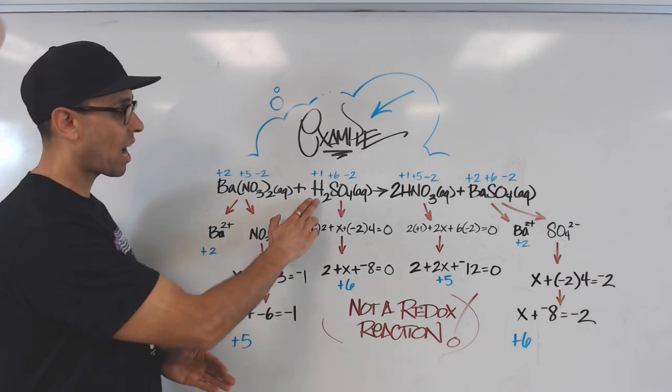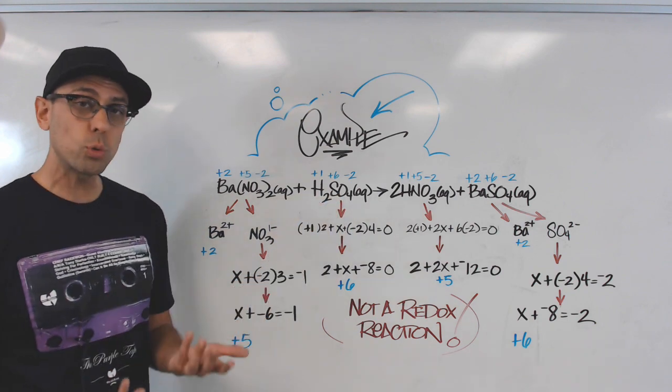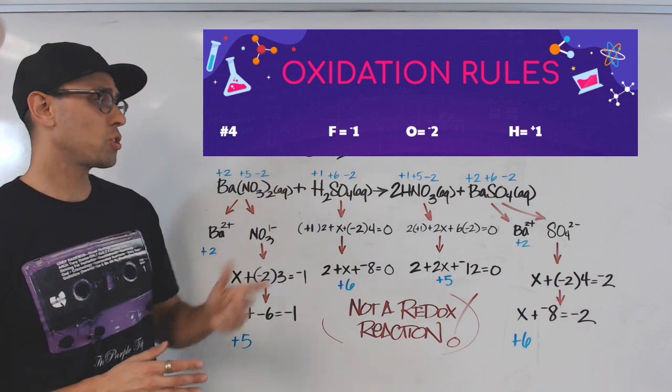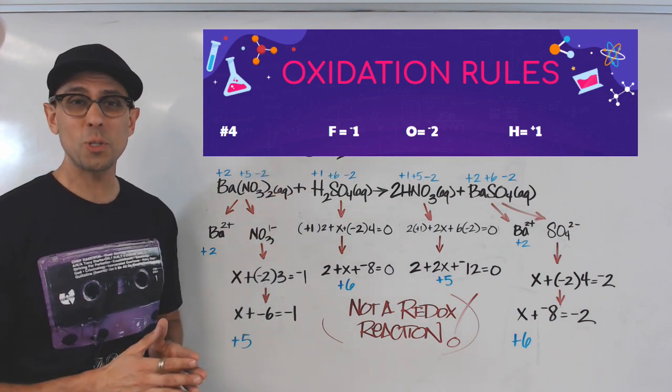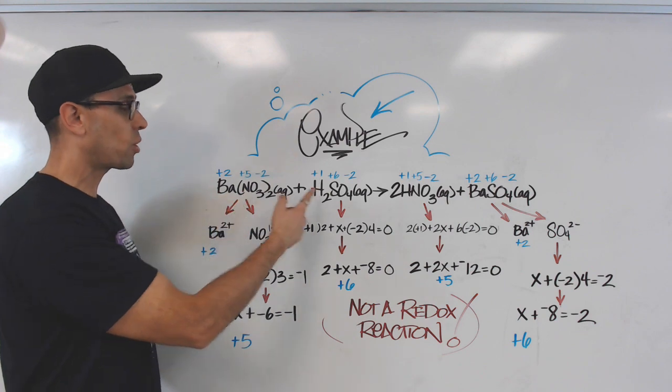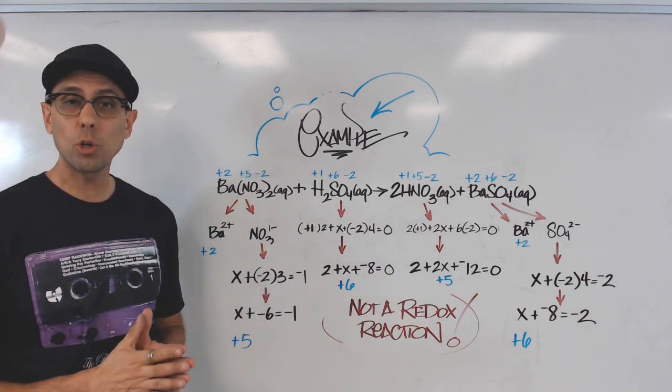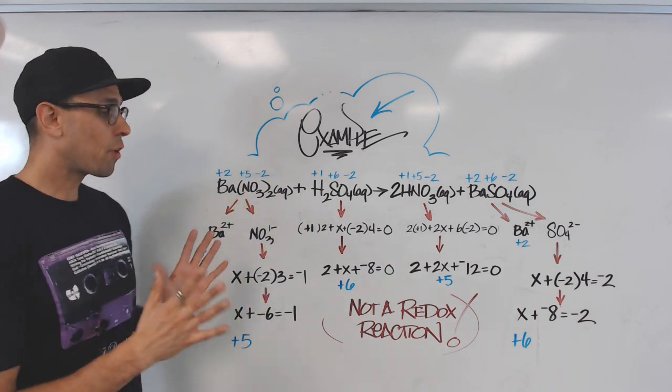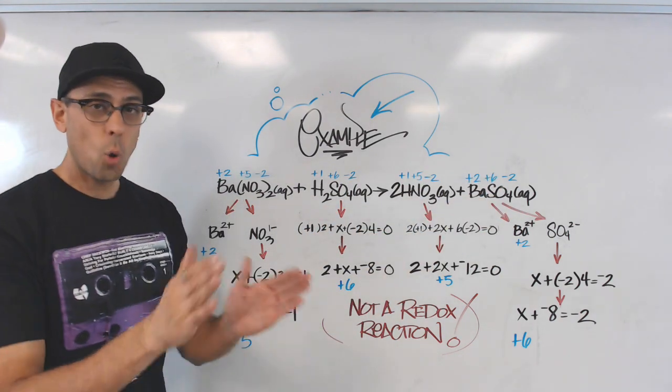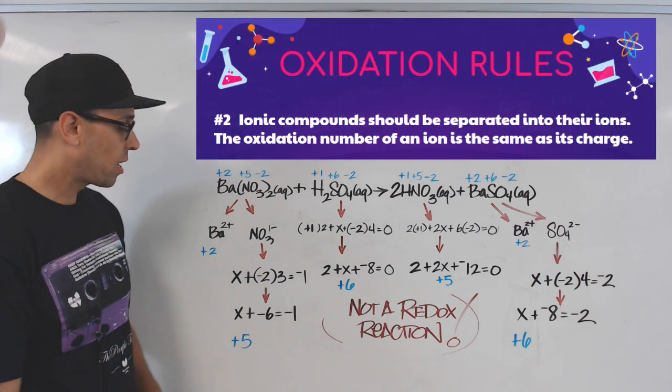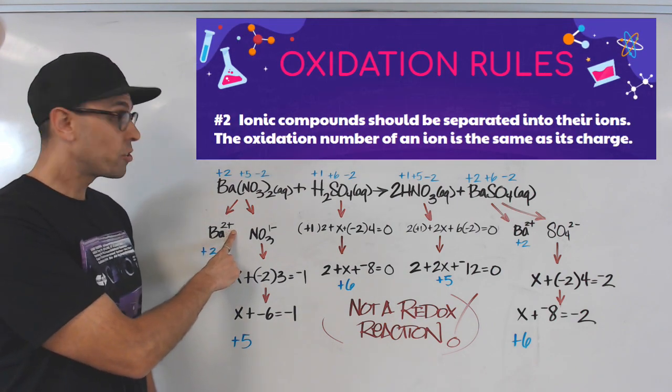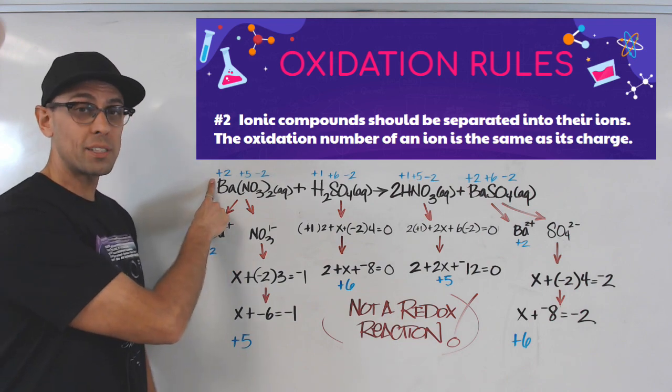We're going to have to remember that for things like hydrogen and oxygen, we have rules that tell us what their oxidation states will probably be. Hydrogen is usually plus one. Oxygen is usually minus two. But when it comes to elements like barium, nitrogen, or sulfur, we're going to have to think a little bit more deeply about it. Now, for any ionic compound like barium nitrate or barium sulfate, we can split it up into its respective ions. When we do that, we see that the barium has a charge of plus two. So its oxidation state will be plus two.